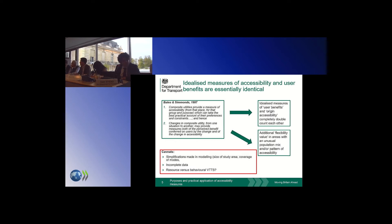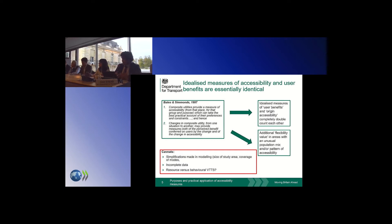However, that doesn't preclude a number of important areas where you can conceive of additional benefits arising from accessibility. One of these might be flexibility value, which essentially relates to the idea that as people's accessibility needs evolve throughout their lifecycle, they might value the flexibility of having different transport options available where they choose to locate, which they may take advantage of later in life. It's unlikely that most static models used to analyse transport investments would account for this flexibility value. So while in the ideal scenario there is an equivalence between accessibility and user benefits, you can still conceive of ways in which it's useful to look at accessibility on its own terms within the CBA sense.